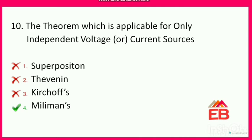Next: which theorem is applicable only for independent voltage or current sources? Options are superposition theorem, Thevenin theorem, Kirchhoff's, or Millman's theorem. The correct option is option 4 — Millman's theorem. In Millman's theorem, it is only applicable for independent sources, not dependent sources. Options 1, 2, and 3 are applicable for either dependent or independent sources.